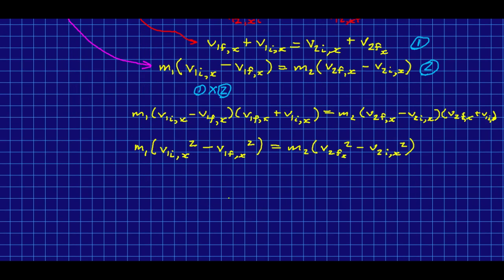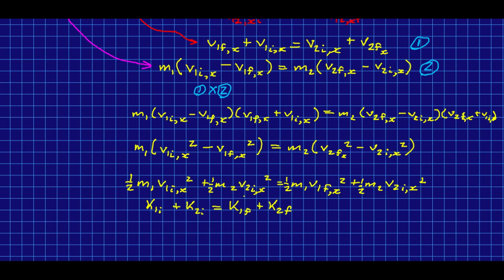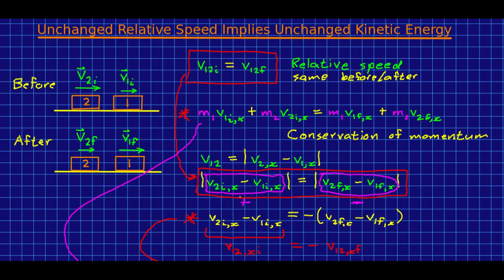And now I'm almost done. I'm going to, once again, collect f's on one side and i's on the other. And there we have it. What you're seeing if I now just multiply through by a half, and I'll talk about why I multiply through by a half in a moment, is k1i plus k2i equals k1f plus k2f. That the sum of the kinetic energies do not change. And I derived that from conservation of momentum and the relative speeds being the same before and after. So the relative speeds being the same before and after implies that the kinetic energy doesn't change, just as I claimed two lectures ago.